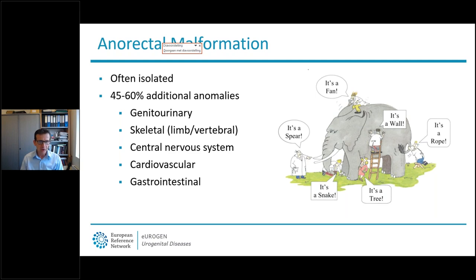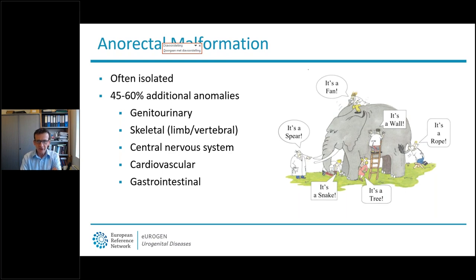The first group of syndromic ARM I would like to have a look at is chromosomal anomalies. Chromosomal anomalies are present in approximately 10 percent of ARM patients and we reviewed them already about 10 years ago. For most of these chromosomal anomalies, ARM is only present in a minority of the patients. But still these chromosomal anomalies could lead us to knowledge on the location of genes that might be involved in anorectal malformation in specific types.